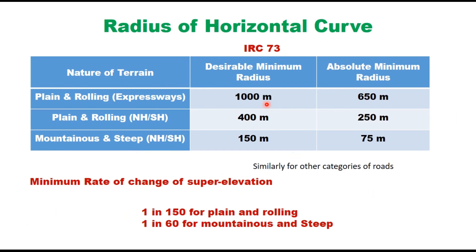The radius of horizontal curves — both desirable minimum and absolute minimum — also depends upon terrain. For expressways in plain and rolling terrain, it is 1000 to 650 meter; for national highway and state highway in plain and rolling terrain, it is 400 to 250 meter; and for mountainous and steep terrain for national highways and state highways, it is reduced to 150 to 75 meter. The minimum rate of change of super elevation also depends on terrain: 1 in 150 for plain and rolling terrain, and 1 in 60 for mountainous and steep terrain.